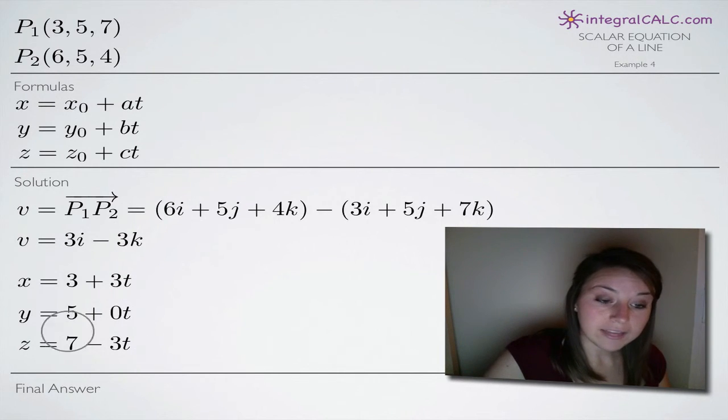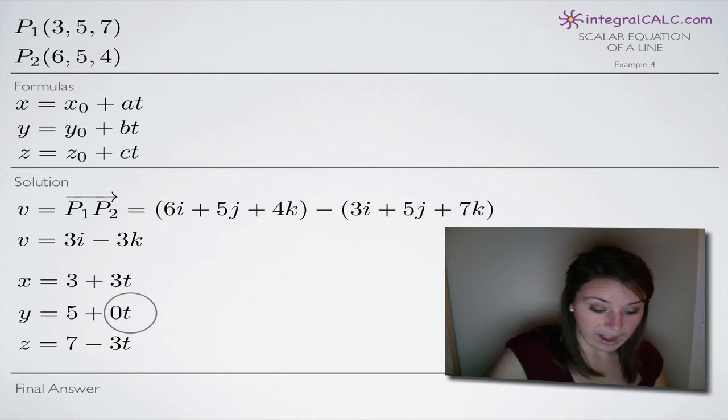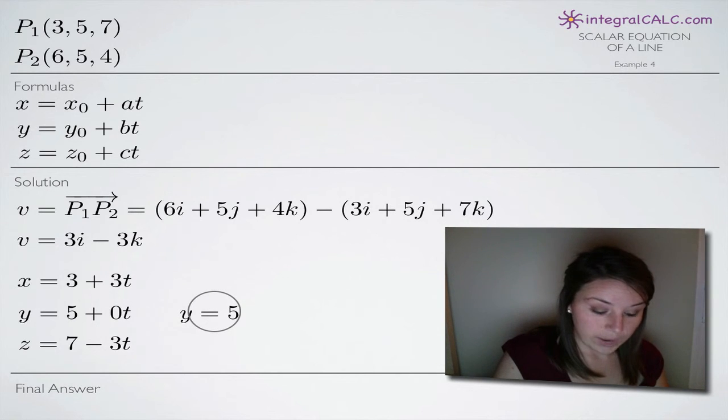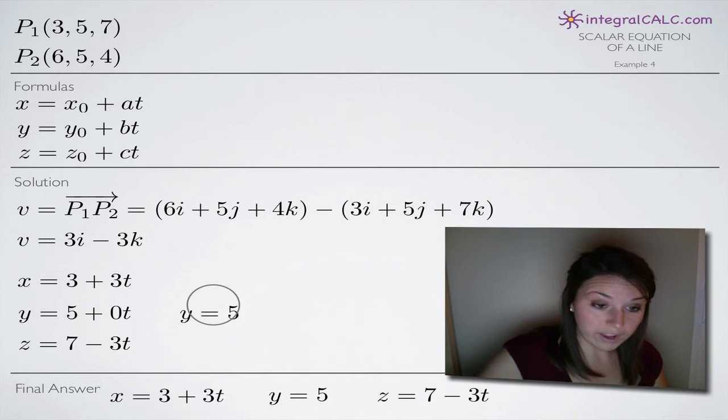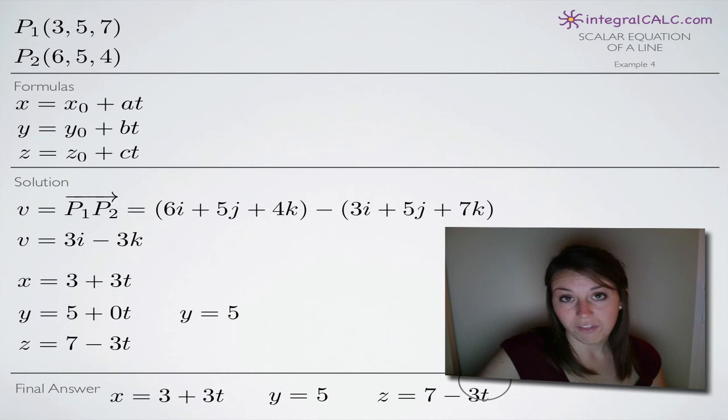Now once you've gotten these three equations written down, you might be done if you've simplified as far as you can. In this case, we can simplify our y equation by dropping off that second term, so we're just left with y = 5. So now when we put these three together, we'll get our final answer. So x = 3 + 3t, y = 5, and z = 7 - 3t. And these three equations together constitute our scalar equations of the line.